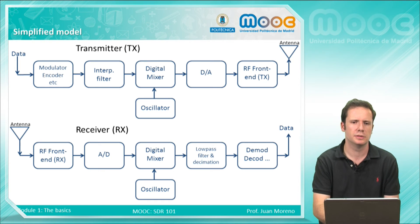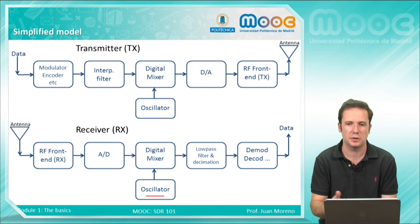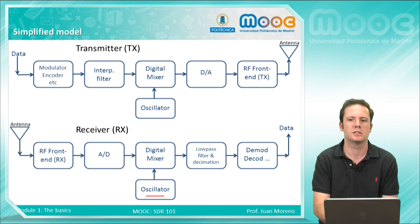In the receiver, it's more or less the same. We have the antenna, then the radio frequency front end, the analog to digital converter because what we transmit is an analog signal, a digital mixer with an oscillator to change the frequency of the signal from radio frequency to intermediate or to baseband, and a low-pass filter, a decimation stage, and also the demodulator, and finally we obtain the data.